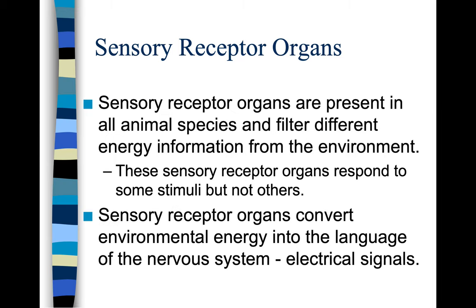Sensory receptor organs are present in all animal species and filter different energy information from the environment. These sensory receptor organs respond to some stimuli but not others. Sensory receptor organs convert environmental energy into the language of the nervous system — electrical signals.